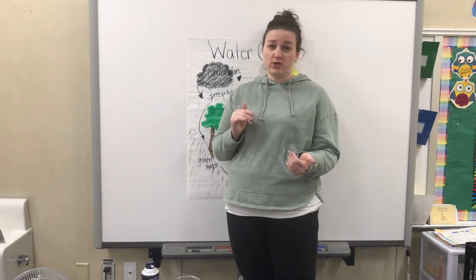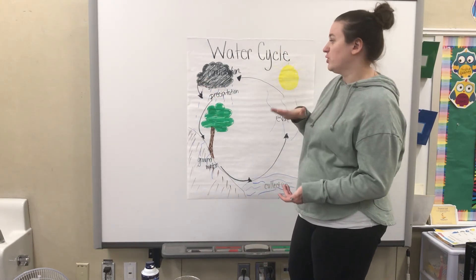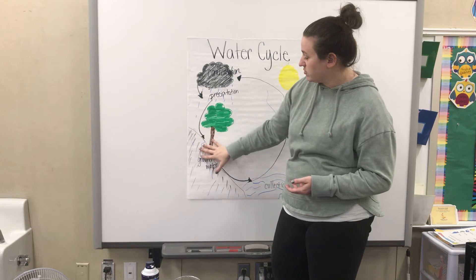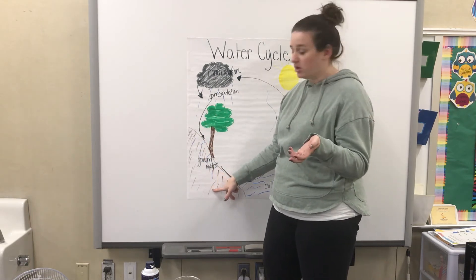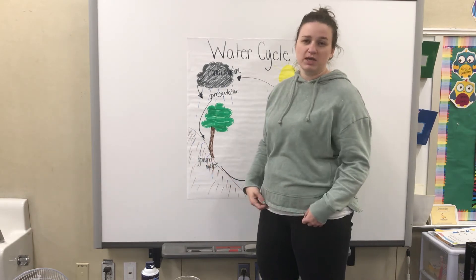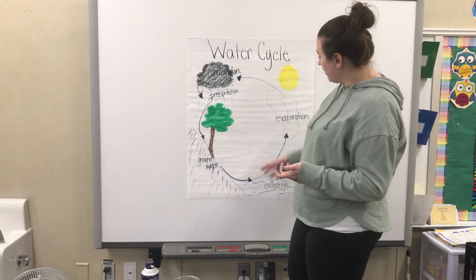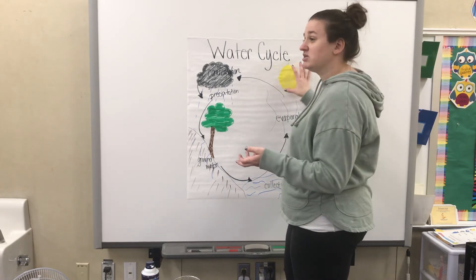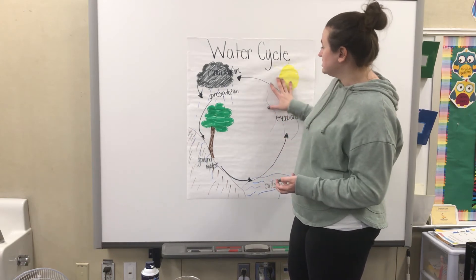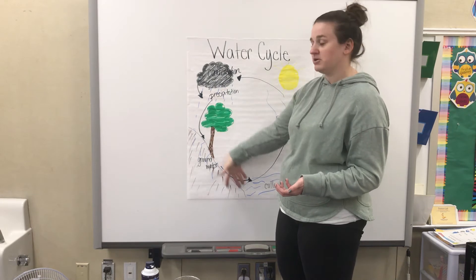Moving on from weather versus climate, we're going to talk about the water cycle. You start with precipitation — rain, snow, sleet — and it falls down. Some of it becomes groundwater, which waters our plants, crops, and trees, and some of it runs off and collects in a lake, a river, or a pond. Once it collects enough and there's a sunny day, the sun heats up the water, it evaporates into the sky, and condenses into clouds. When the clouds get heavy enough, they release the precipitation back down into the atmosphere.